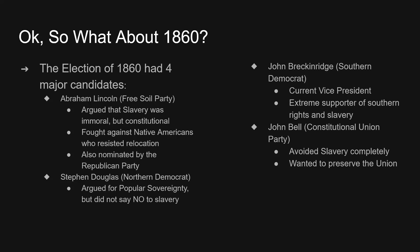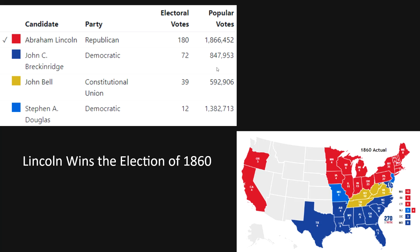Then we have John Bell, who is a member of the Constitutional Union Party, and John Bell's whole platform was just keeping the union together. The ultimate results: Abraham Lincoln wins with 180 electoral college votes. Second place gets 72. Stephen A. Douglas gets the second most popular votes but only gets 12 electoral college votes, because Douglas came in second place in just about every state — he may not have won, but he was second everywhere.